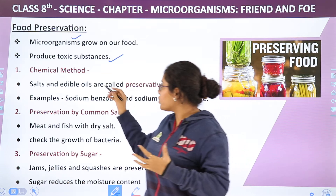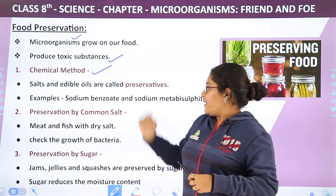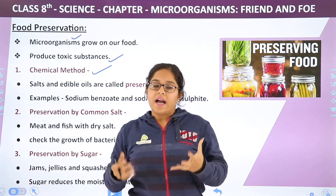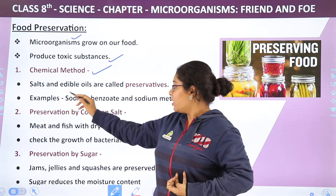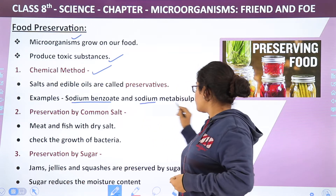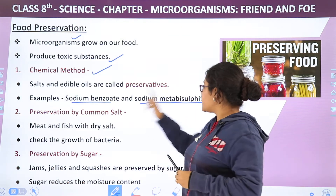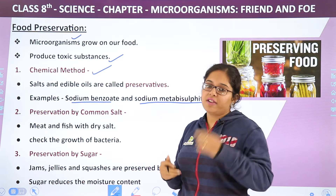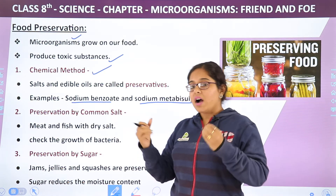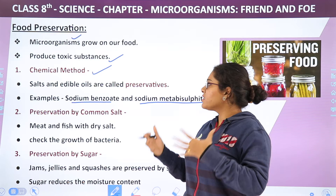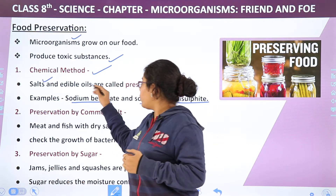The first method of food preservation is the chemical method. We add some chemicals. There are chemicals like sodium benzoate and sodium metabisulphite. These are two chemicals that act as food preservatives. But if we don't want to use chemicals, then what can we use? Salts and oil.